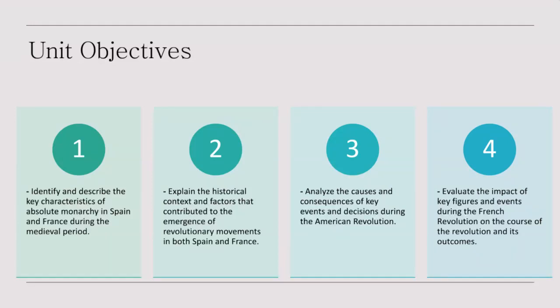We will begin by identifying and describing the key characteristics of absolute monarchy in Spain and France during the medieval period. Absolute monarchy was characterized by centralized power vested in the monarch. In Spain, monarchs like Ferdinand and Isabella consolidated their authority through the Reconquista, unifying the country and establishing the Spanish Inquisition. This era also witnessed the exploration of the New World by Spanish explorers like Christopher Columbus, which expanded Spain's global influence.